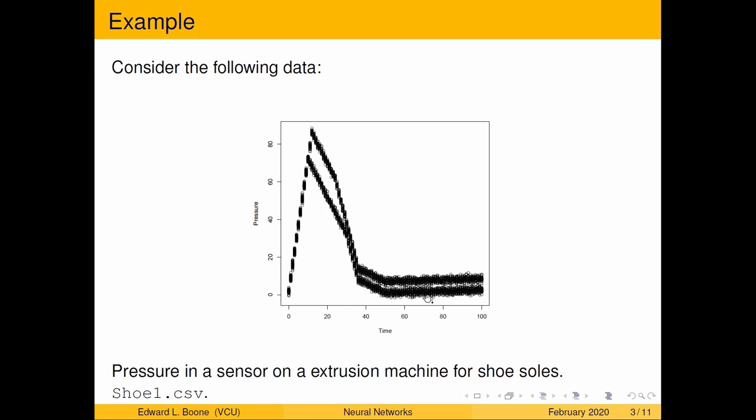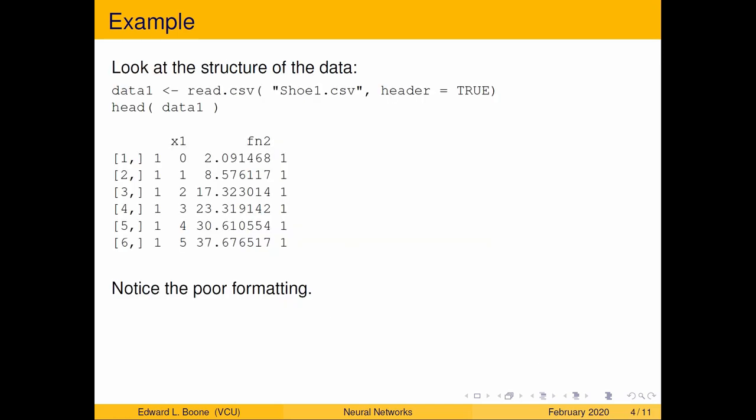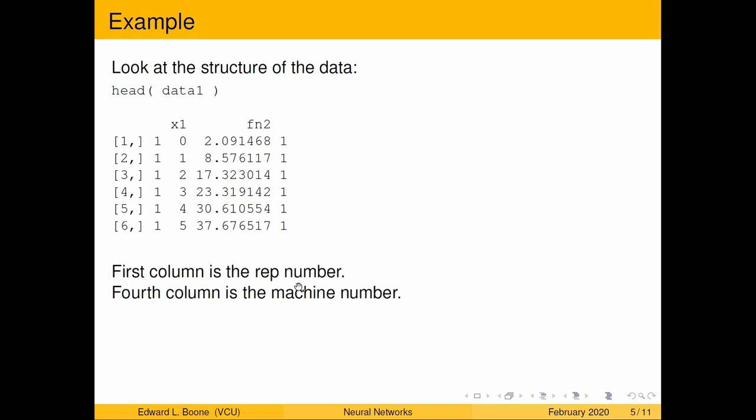If you quickly realize that that thing is not a straight line, so a straight line is not going to work there. All right so let's read in this data. Here's the code to read it in and notice it has poor formatting. It has x1 here and then it has fn2 which is the actual pressure. So we need to know what these are. The first column is the rep number. So you've repeated this on multiple shoes so you want to have the rep number.